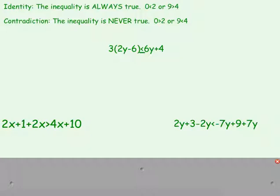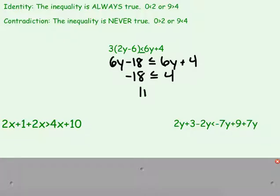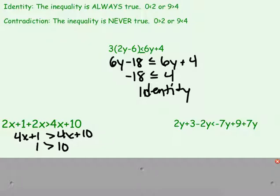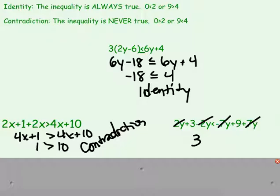Let me do these very quickly. On the left side we get 6y minus 18 is less than or equal to 6y plus 4. Subtracting 6y from each side gives negative 18 is less than or equal to 4 — that is true, so we call that an identity. Next: combining like terms gives 4x plus 1 is greater than 4x plus 10. Subtracting 4x gives 1 is greater than 10 — not true, so that's a contradiction. Last one: the 2y and negative 2y cancel out, leaving just 3, and the negative 7y and 7y cancel on the right, leaving less than 9. Since 3 is less than 9, we call that an identity.